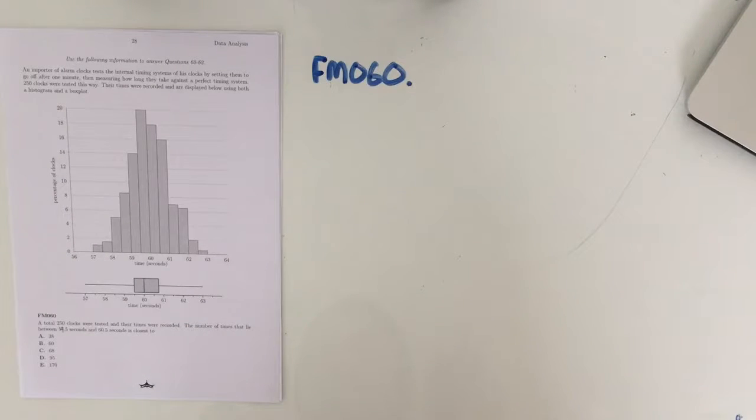What we're going to do is find the percentage that fall between 59.5 and 60.5, and then find that percentage of the 250 clocks to get our final answer. Don't be tricked and just find the percentage and put that in as your answer. It's going to be a little longer than that.